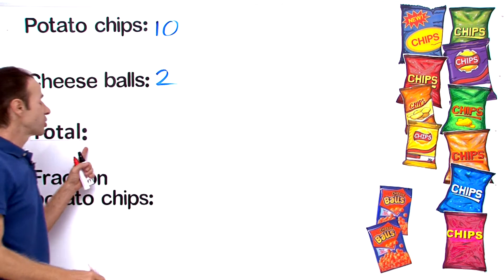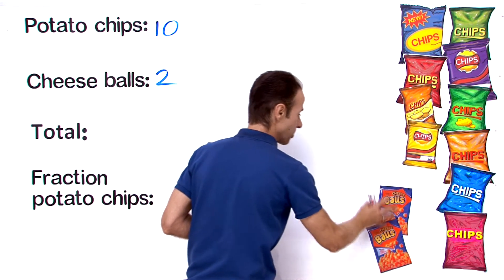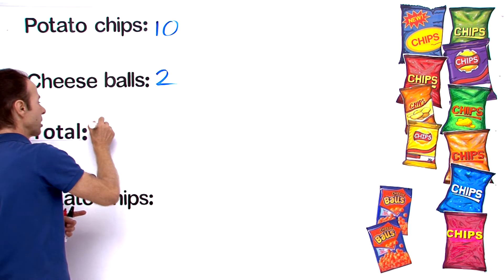What is the total number of snacks all together? Well, all the potato chips and all the cheese balls all together - 10 plus 2, that equals 12.